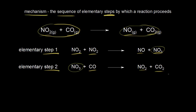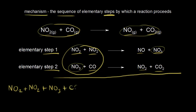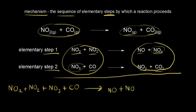Any possible mechanism must have elementary steps that add up to give the overall reaction. So if we add these two steps together, we should get the overall reaction. Let's put all of our reactants on one side: NO2 plus NO2 plus NO3 plus CO. And then all of our products on the other side: NO plus NO3 plus NO2 plus CO2.